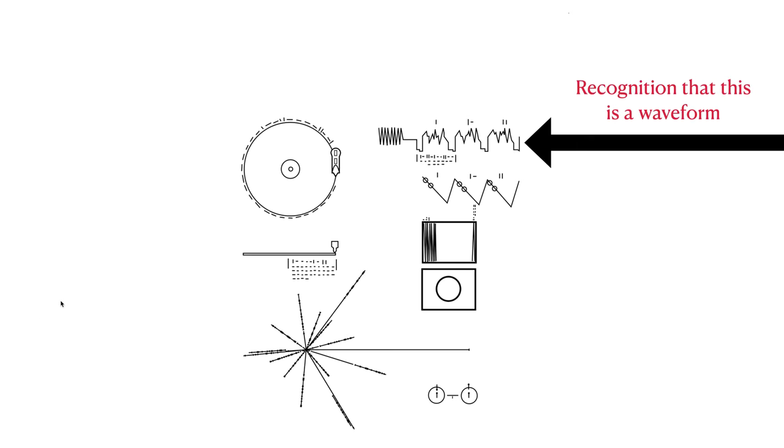The image on the upper right is a waveform. So, a recognition of a visual depiction of a waveform that you would get when you play the record. So, someone trying to understand what's going on would need to recognize that this is a visual depiction of a waveform.